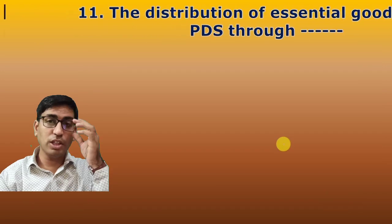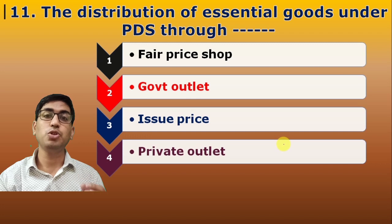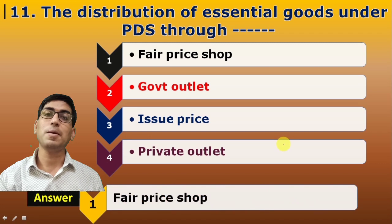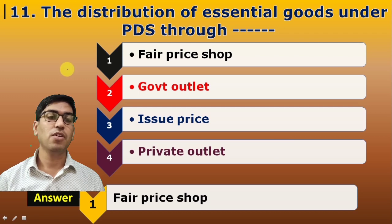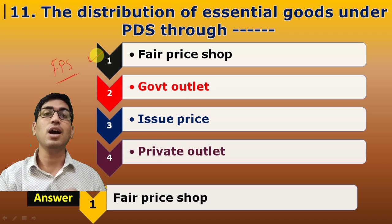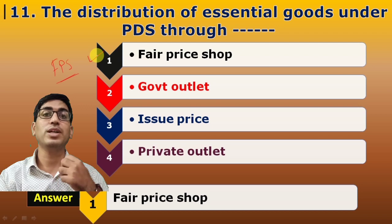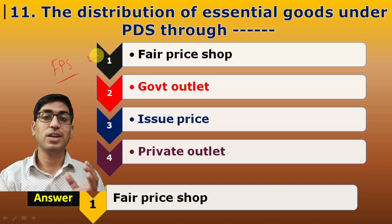Eleventh question: Distribution of essential goods under PDS is through FPS (Fair Price Shops) — these are government outlet issue outlets. Under RPDS, different types of essential goods like kerosene are also distributed. So the answer is distribution of goods through Fair Price Shops.